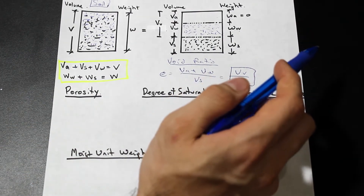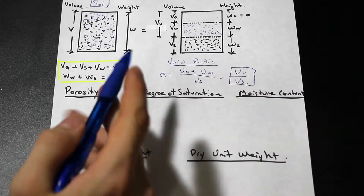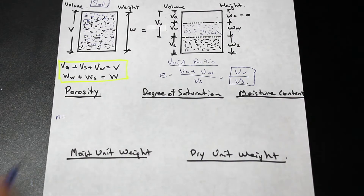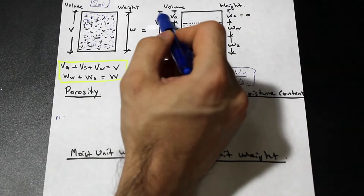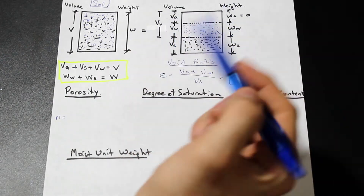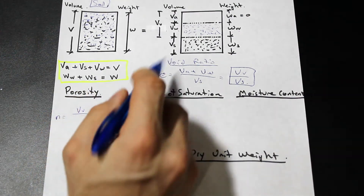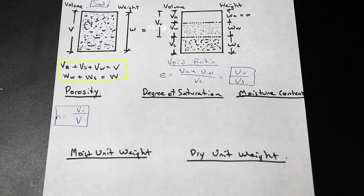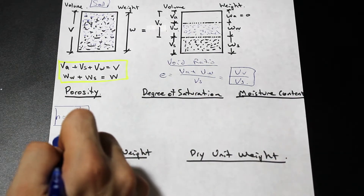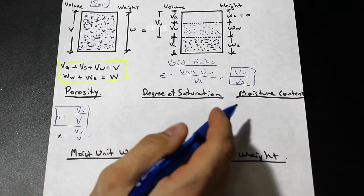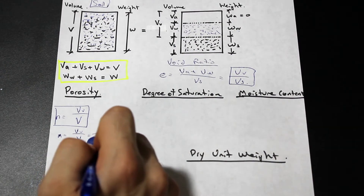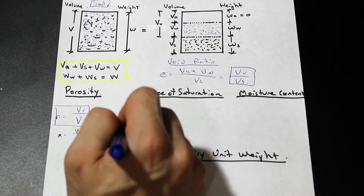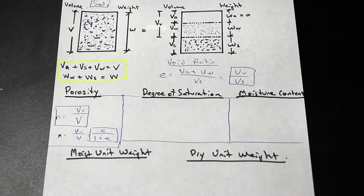Now let's take a look at porosity. Porosity, denoted by n, is the ratio of the volume of the voids to the volume of the soil specimen — it's a little bit different from the void ratio. We have the volume of voids, which is air and water, divided by the total volume V. There's also a derivation relating n to e that's worth knowing; we'll probably cover that in another video.